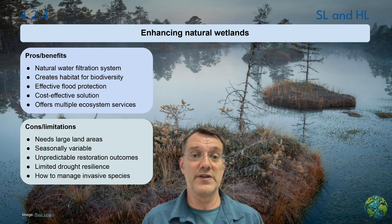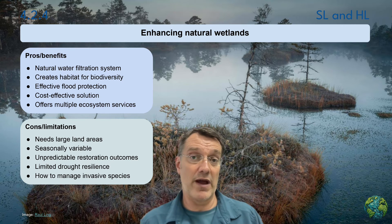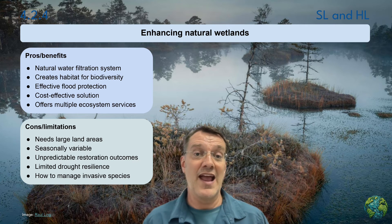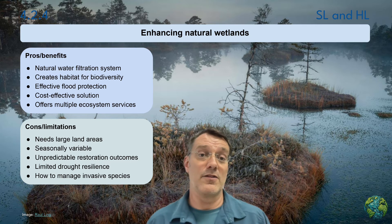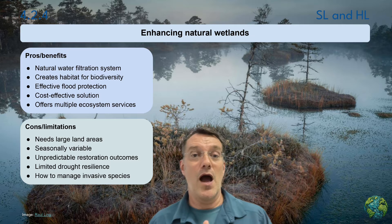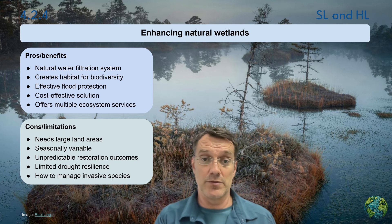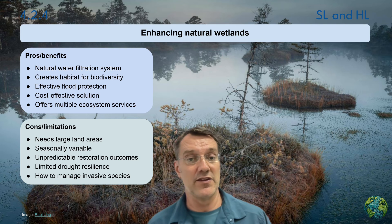Enhancing natural wetlands provides multiple ecosystem services alongside water management benefits. Consider the impact of restoring natural wetlands and connect it back to what we did in topic three. Wetlands act as natural water filtration systems, they create habitat for biodiversity, they provide effective flood protection, and they offer cost-effective water management solutions. However, limitations include land area requirements, seasonal variability in water availability, unpredictable restoration outcomes, and challenges in managing invasive species. Unlike engineered infrastructure, wetlands integrate water management with ecosystem health, providing water purification, groundwater recharge, and habitat preservation simultaneously. Many regions are now restoring degraded wetlands to improve water security.